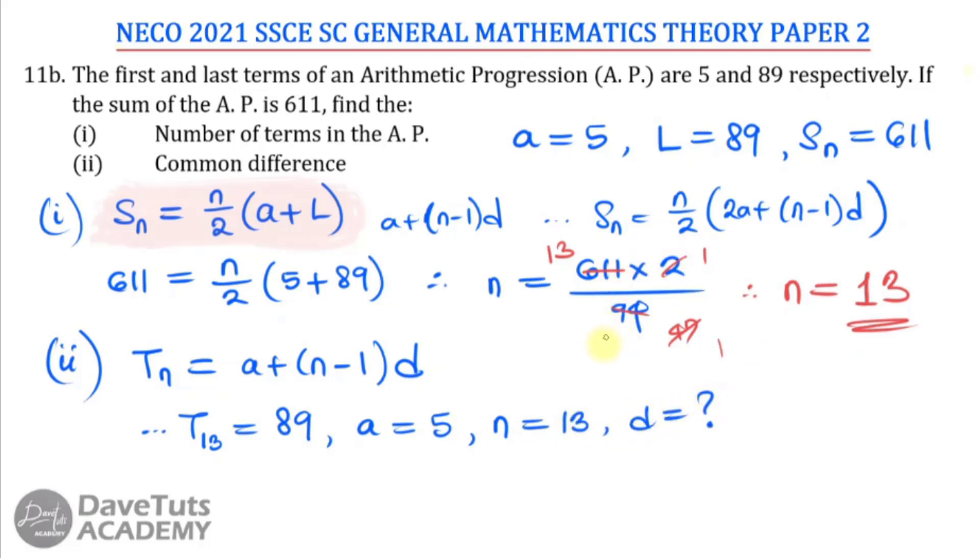If we just bring in all of these parameters that we have, we can say 89 is equal to A is 5 plus N minus 1 will now be 12D, such that 12D will be, well, we take 5 to the other side, it will be 89 minus 5, and that will be 84.